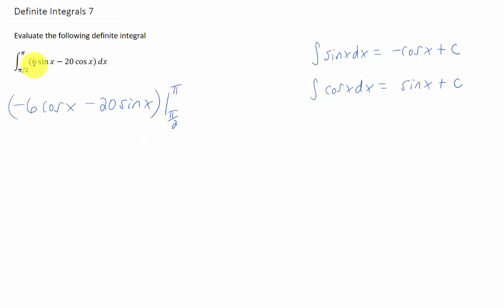Again, all we did there was we ignored the six and took the integral of sine of x, which we decided was negative cosine of x. We ignored the minus 20 and took the integral of cosine of x, which we know is sine of x.